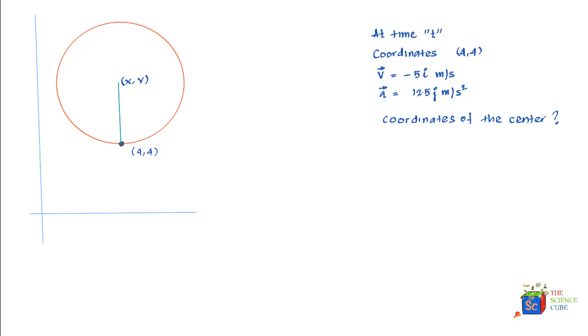Now we have a question here where they say that there's a particle which at time t has coordinates (4,4) and a velocity of -5i and a centripetal acceleration of 12.5j, and they're asking us that with this information, what are the center coordinates of this uniform circular motion?